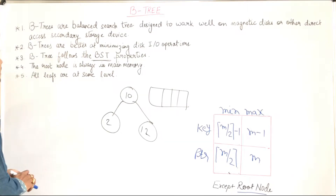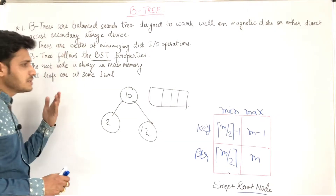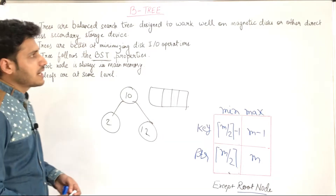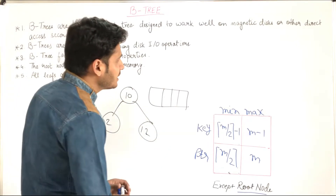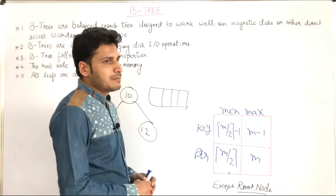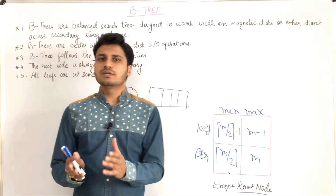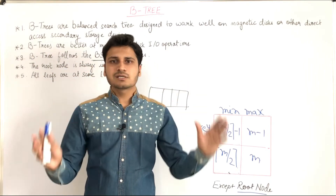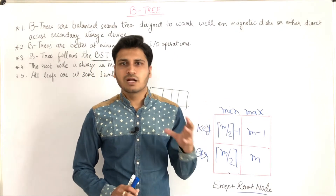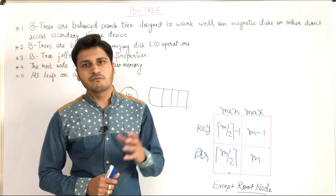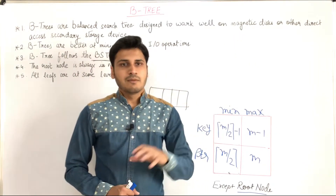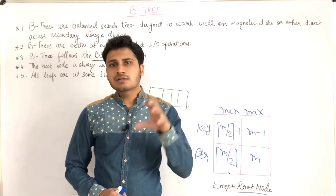Basically, the property of B-tree is that B-tree is a balanced search tree designed to work well on magnetic disk or other direct access secondary storage devices. Basically, B-tree is designed for large amounts of data which we have stored in secondary memory — magnetic disk or magnetic tapes.